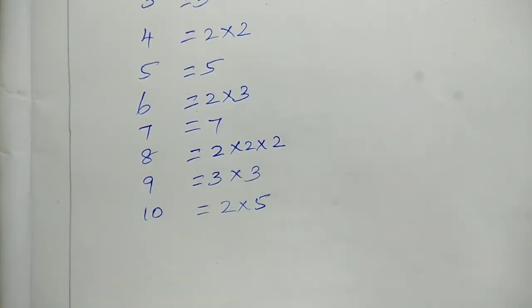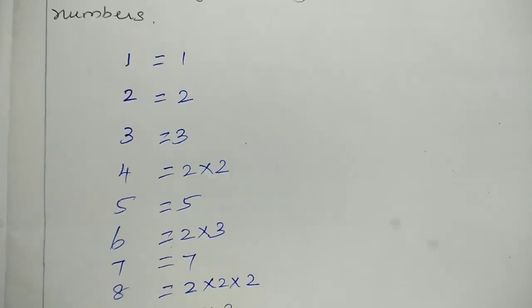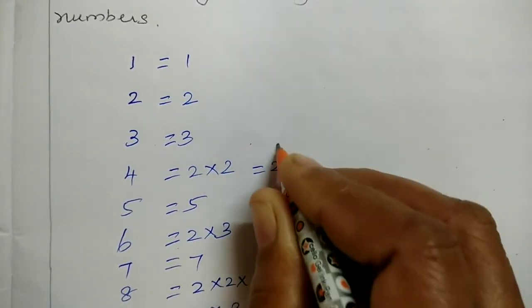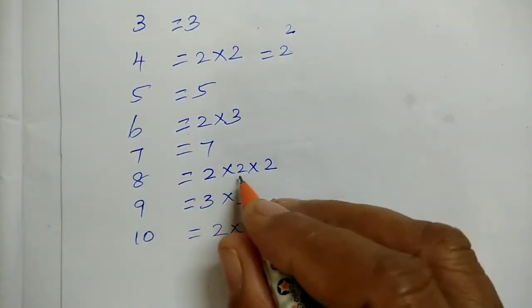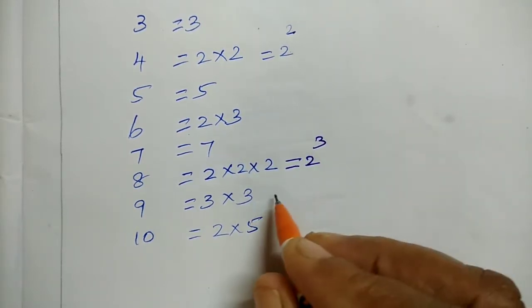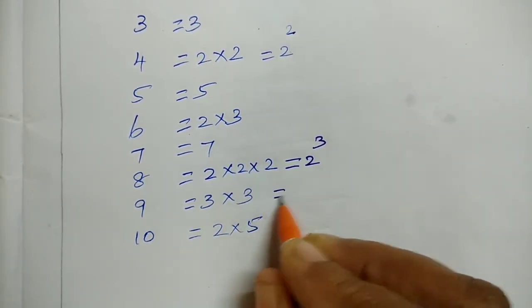9 is 3 into 3, 10 is 2 into 5. These are the factors. If we put 4 as 2 into 2, we write it as 2 squared. If we put 2 into 2 into 2, then it is 2 cubed. If we put 3 into 3, then it is 3 squared.